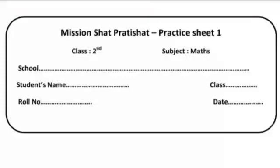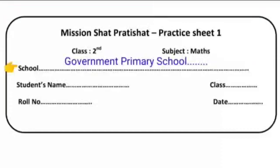So first of all we will write school name. Like Government Primary School, you will write the full name of your school. Next is student's name. Here you will write your name, like here I am writing Ravneet Kaur.